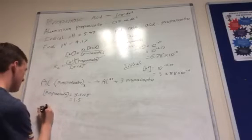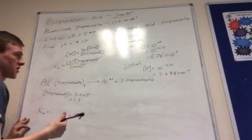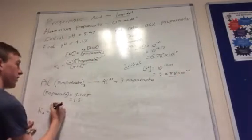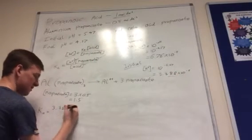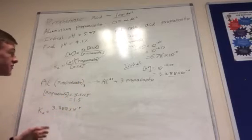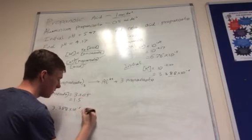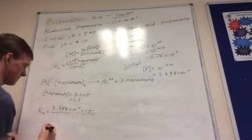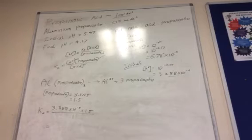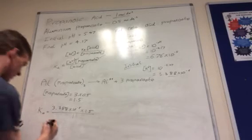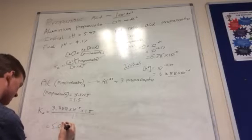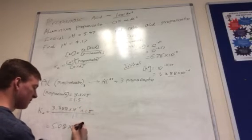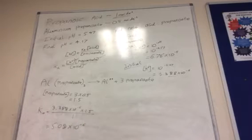Now we know the propanoate concentration, so we can calculate Ka. Ka = [H⁺]initial × [propanoate] / [acid] = 3.388 × 10^(−6) × 1.5 / 1. Putting that into the calculator gives Ka = 5.08 × 10^(−6).